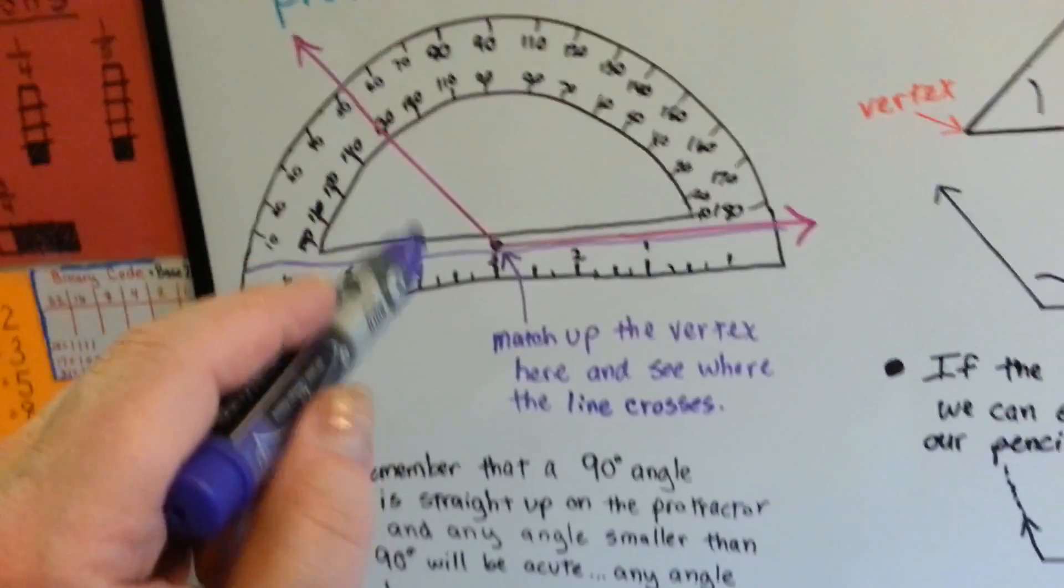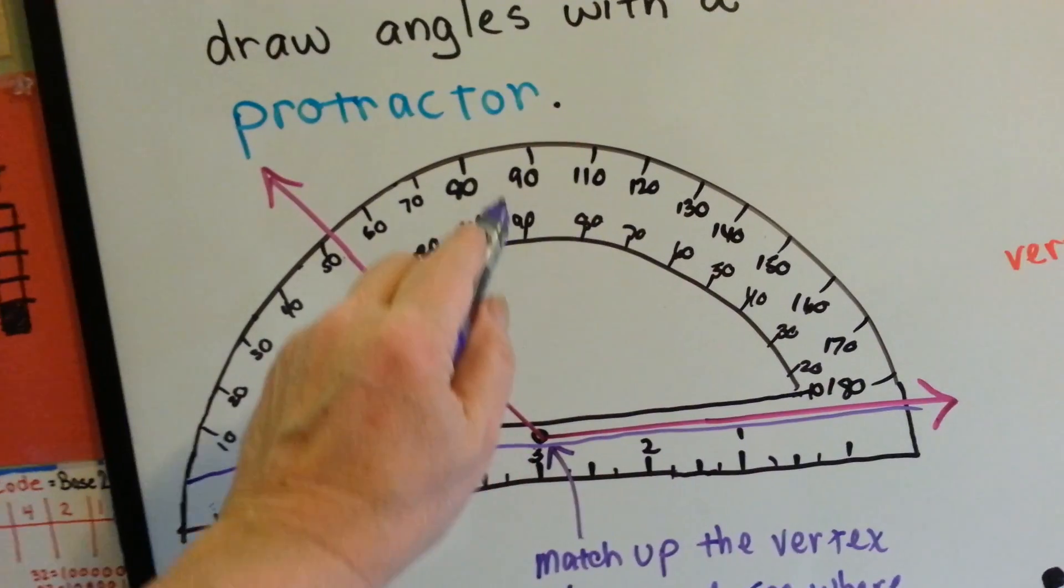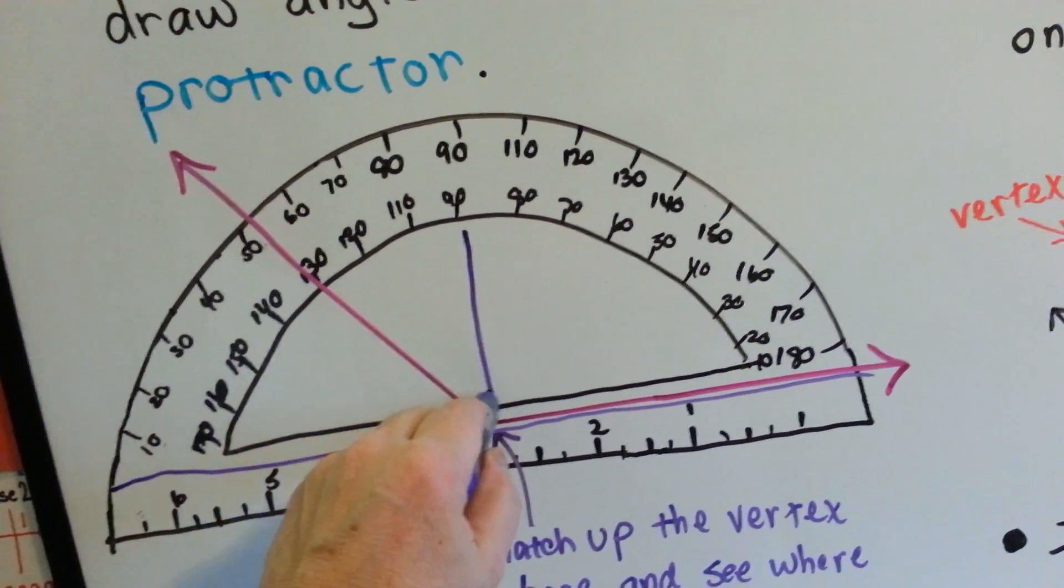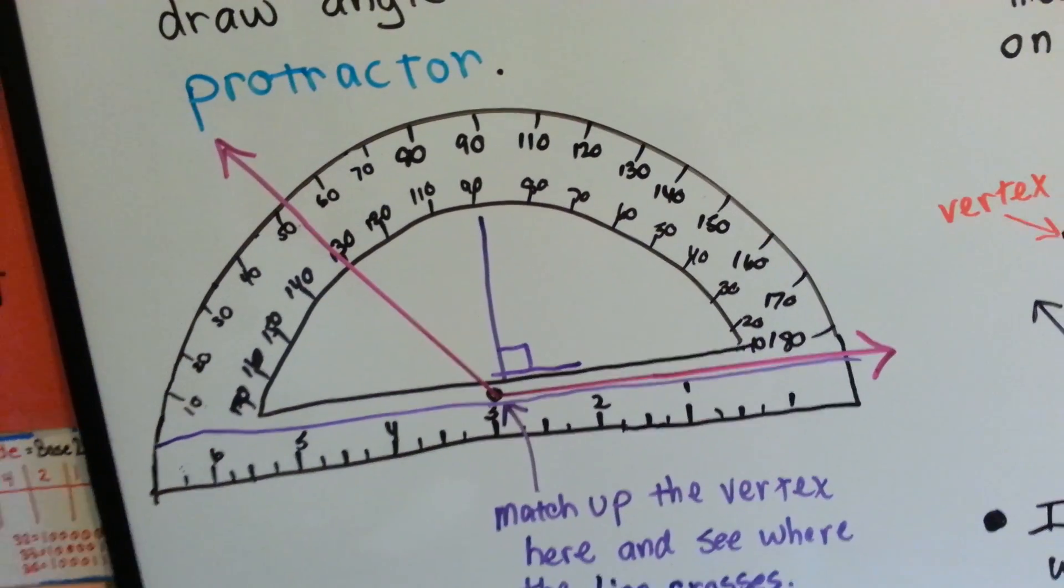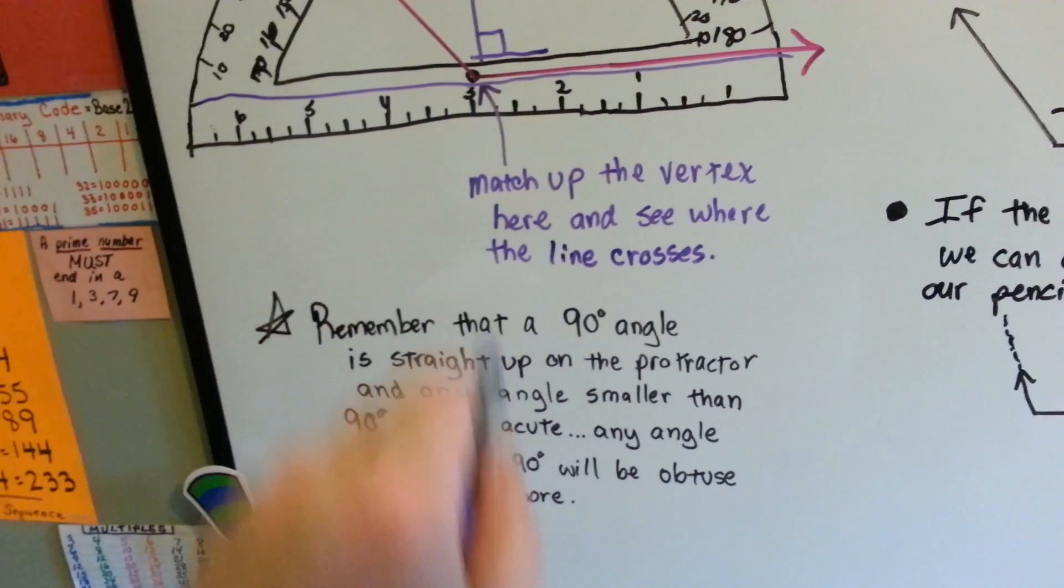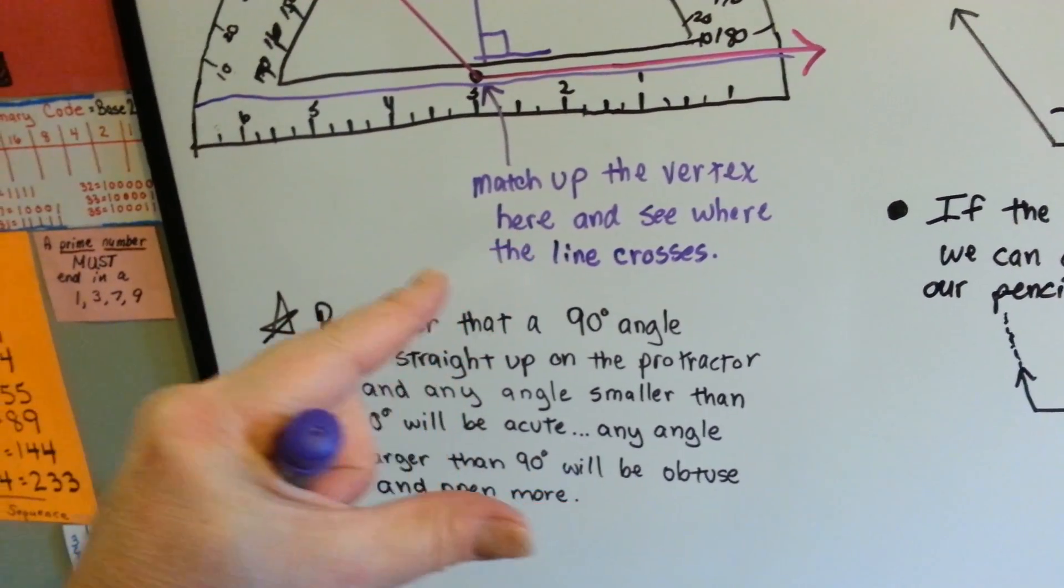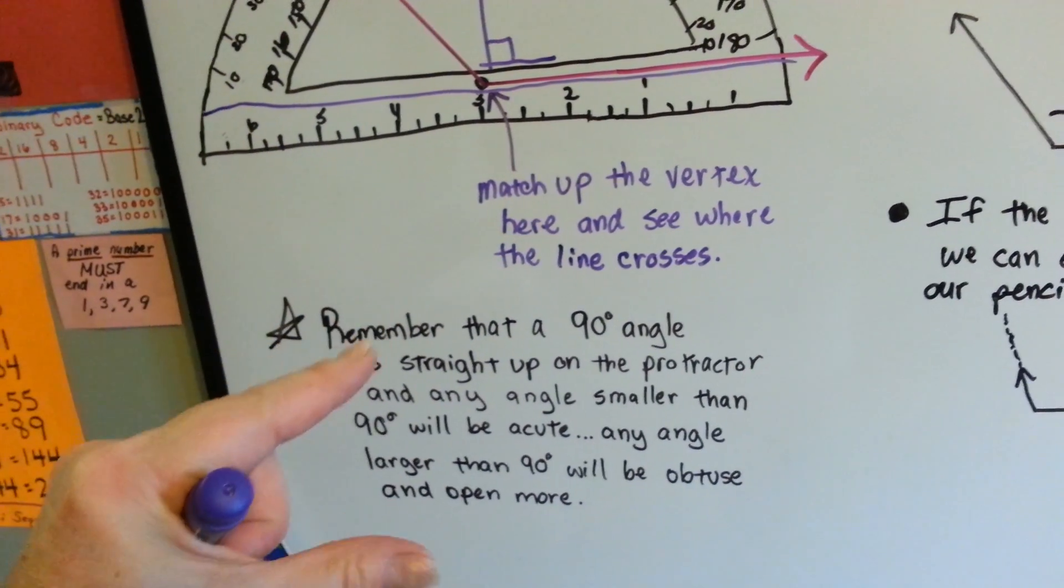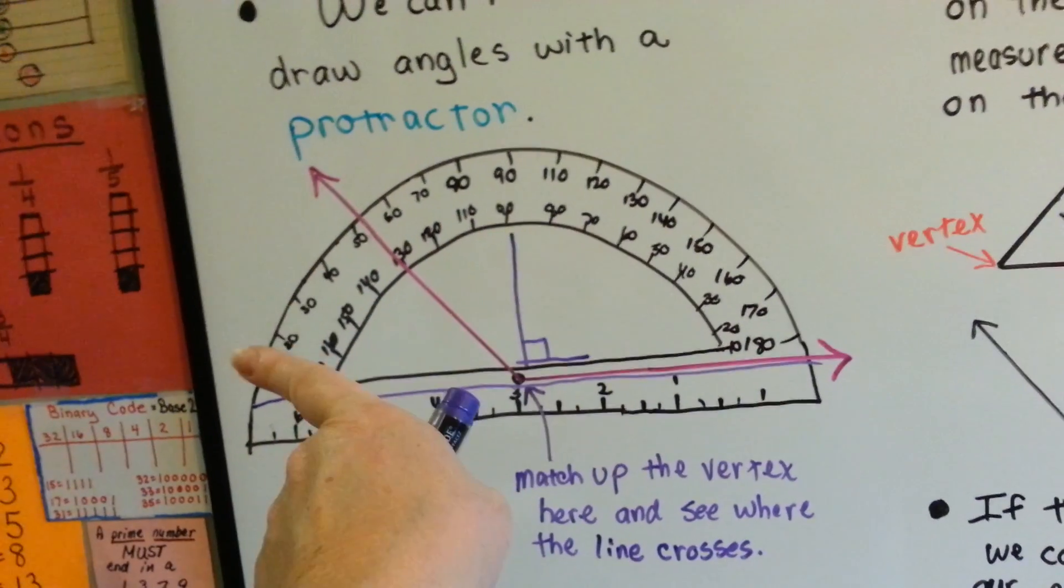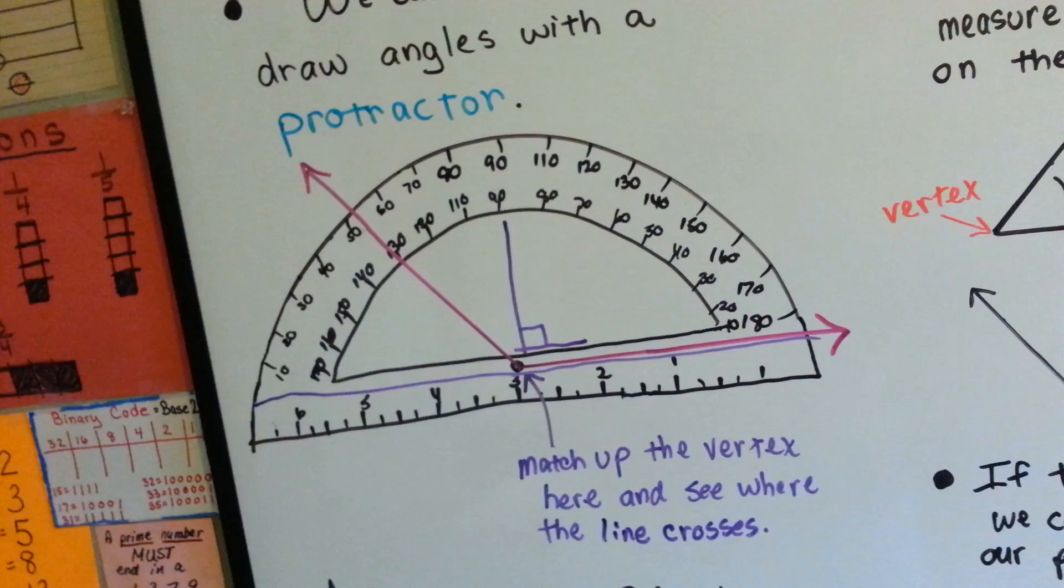So what I want you to remember is this: that a 90 degree angle is straight up. A 90 degree angle is like this, right? It's like a box or like a square. So as long as you remember that the 90 degree angle goes straight up, that means any angle that's smaller than that straight up one is an acute angle, and it's going to be less than 90, and anything bigger, anything on this side of it that's open more is an obtuse angle, and it's going to be more than 90.